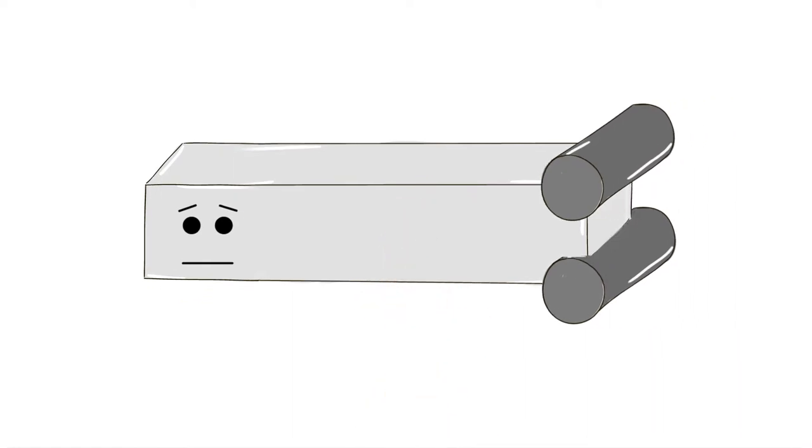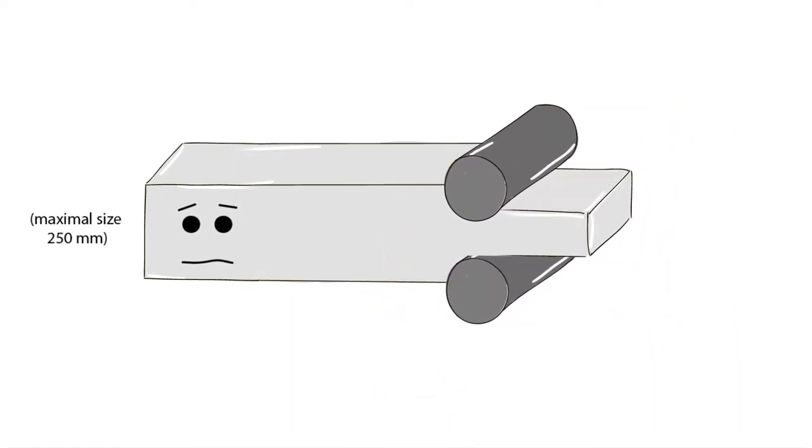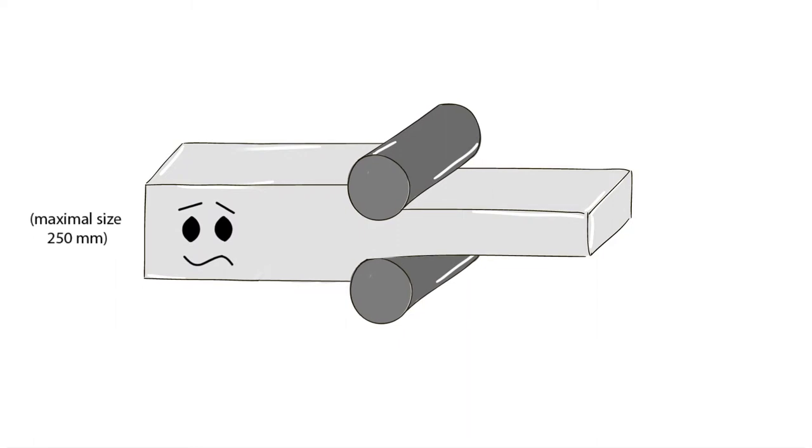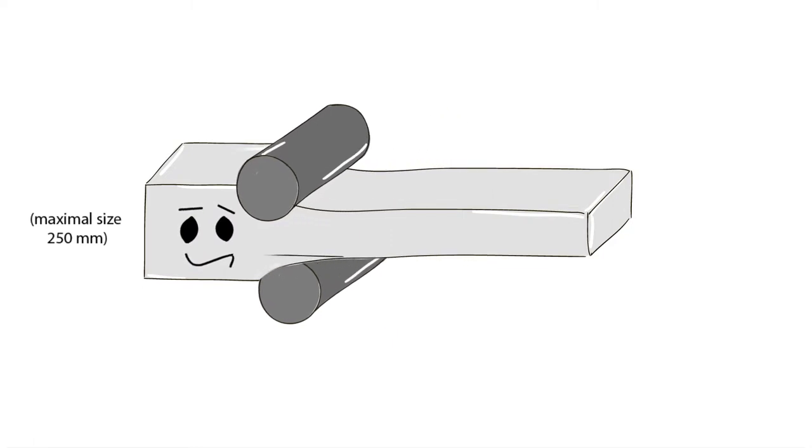During the rolling process, the aluminium alloy block is pressed thinner and thinner to become a plate. One could even say it's squeezed and tortured.